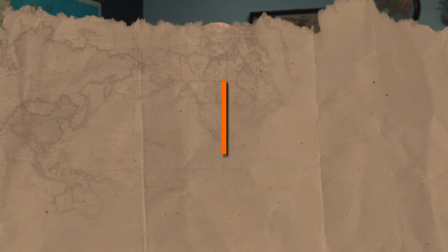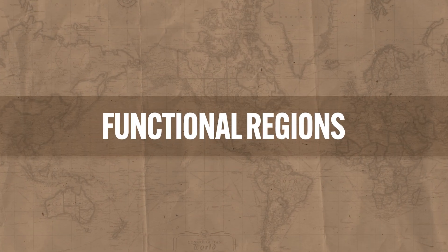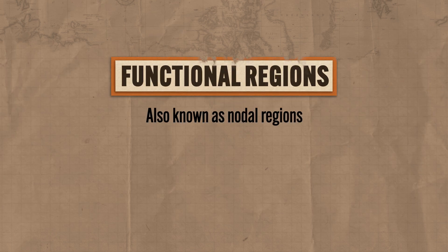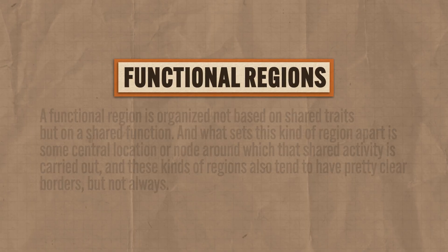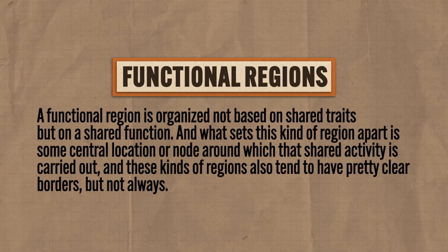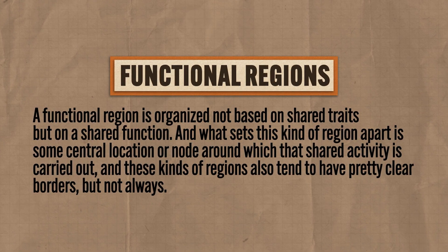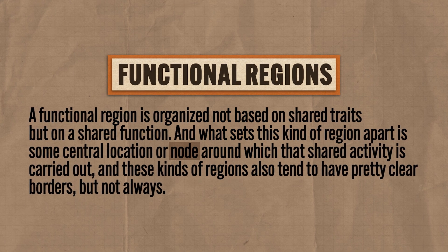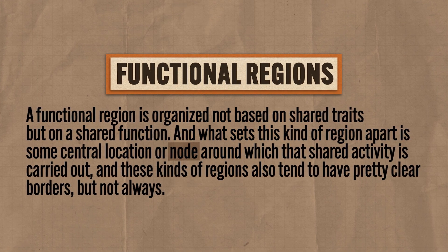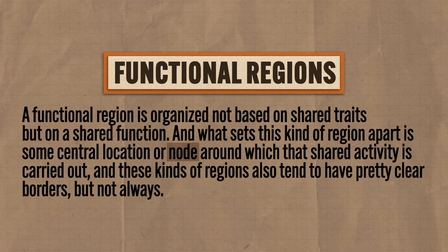Now let's look at the second kind of region you need to know, namely functional regions, also known by its nastier name, nodal regions — again, same thing, don't get confused. Basically, a functional region is organized not based on shared traits but on a shared function. What sets this kind of region apart is some central location or node around which that shared activity is carried out. These kinds of regions also tend to have pretty clear borders, but not always.